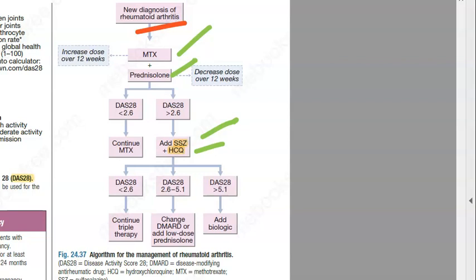If it is less, then continue the triple therapy. What is the triple therapy? Triple therapy should be methotrexate plus sulfasalazine plus hydrochloroquine, because the prednisolone they decrease the dose. Then coming here, if the score is still high.